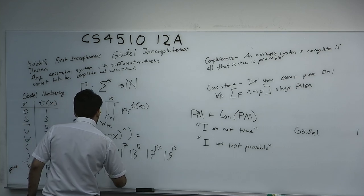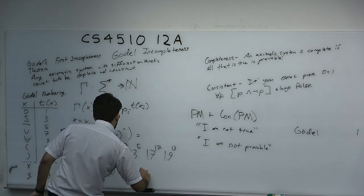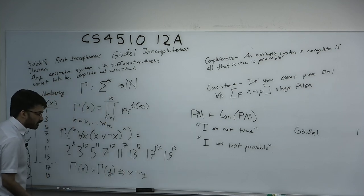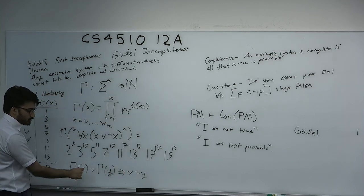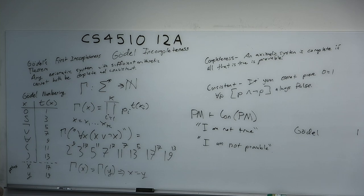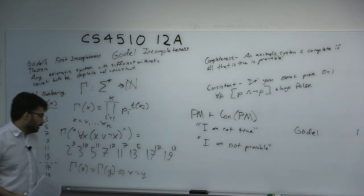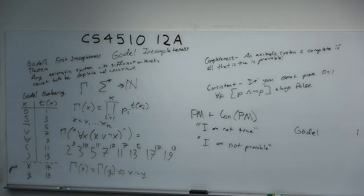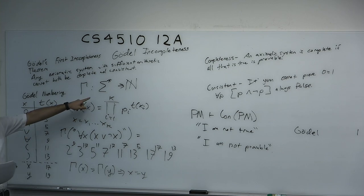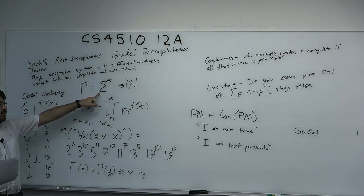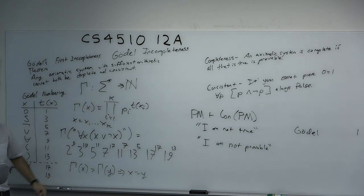We can convince ourselves that γ(x) = γ(y) implies x = y (in the string sense), and the reverse is obviously true. This is not necessarily a bijection from all strings to the naturals, because many strings are not valid logical statements. This is how he converts logical statements into numbers.